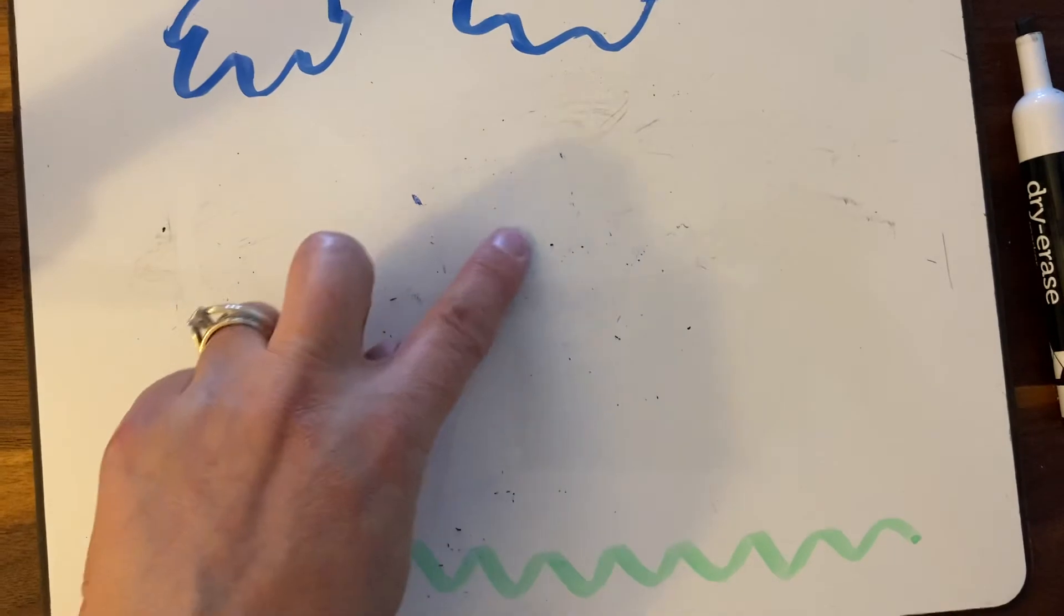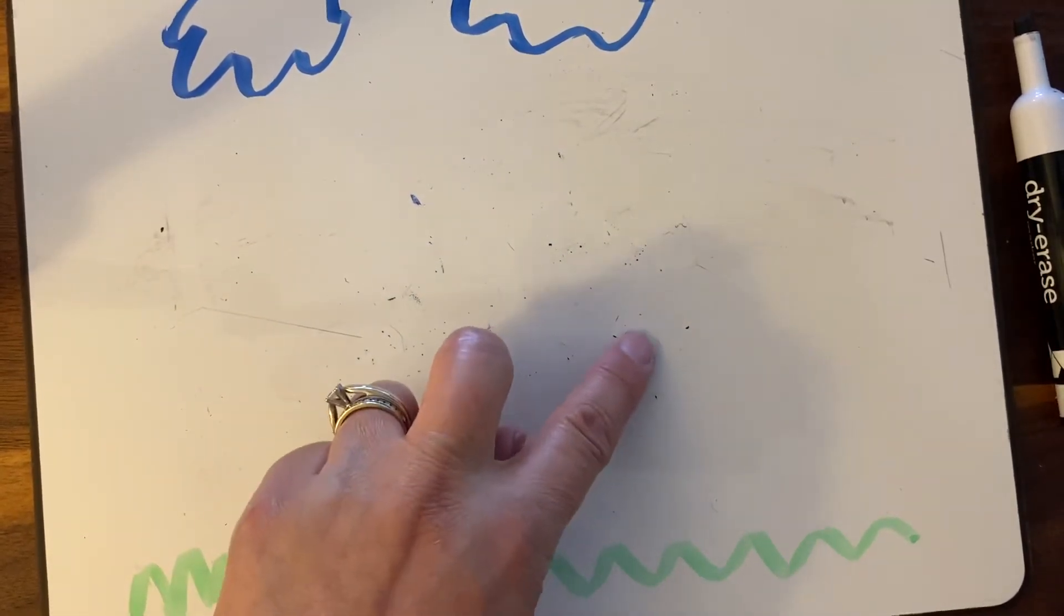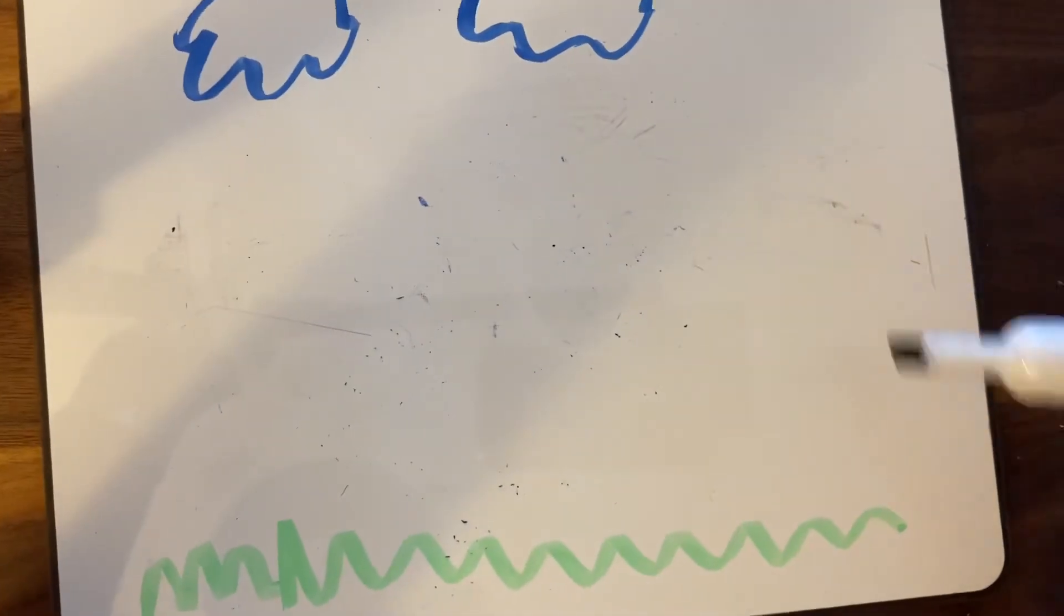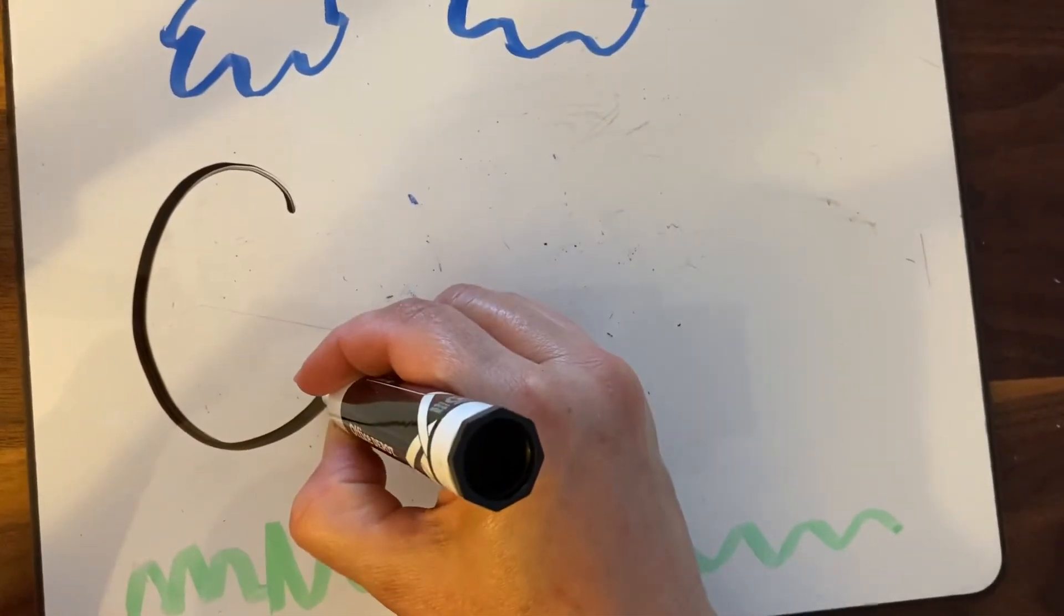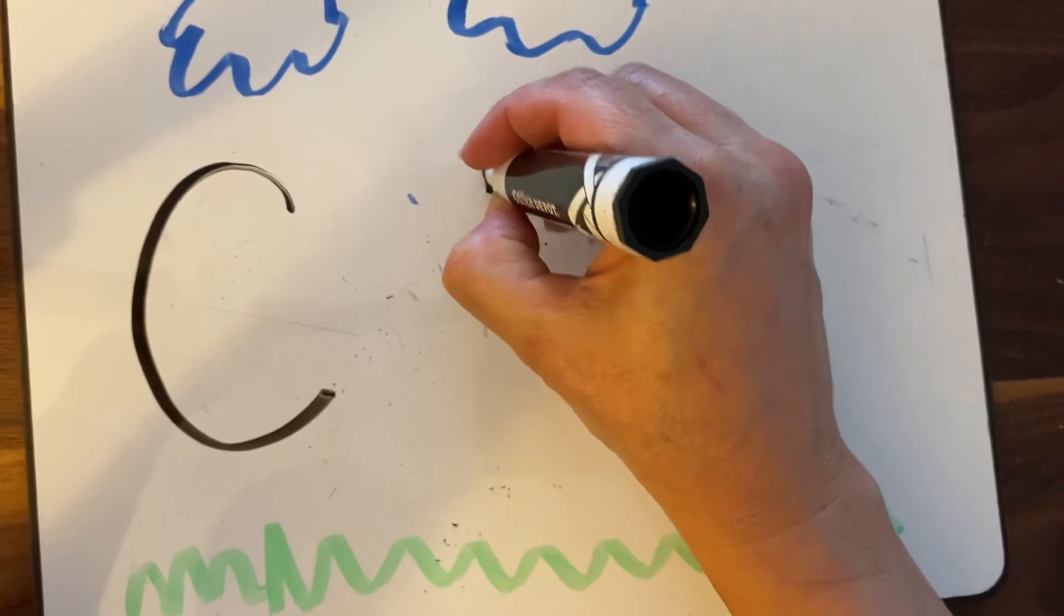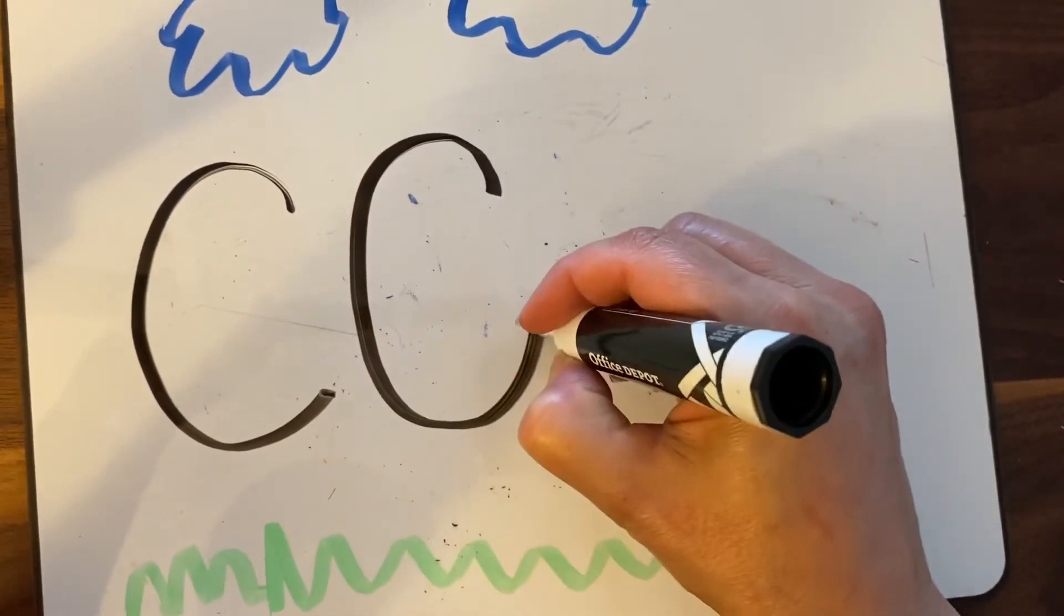And then you could practice over, around, open, lowercase C. So I'm going to practice again with my marker. Over, around, open, C. I'm going to make a couple uppercase. Over, around, open, C.